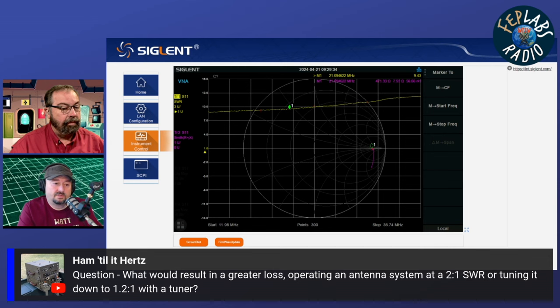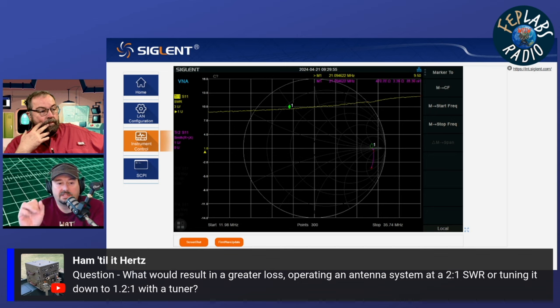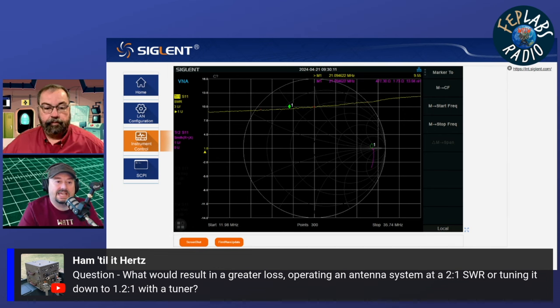When you use a tuner, this is where I think a lot of people have trouble understanding how transmission lines actually work. A lot of people say the transmission line is part of the antenna, which it's clearly not. When you look at the feed point of your antenna and see a 2:1, you hook a transmission line to that and then look at it in your ham shack and you're going to see close to 2:1 looking into the transmission line. That's because that transmission line is a window from your shack to the antenna feed point. You're going to have some loss and attenuation based on the quality and length of the cable. That's why the SWR is not going to look exactly the same.